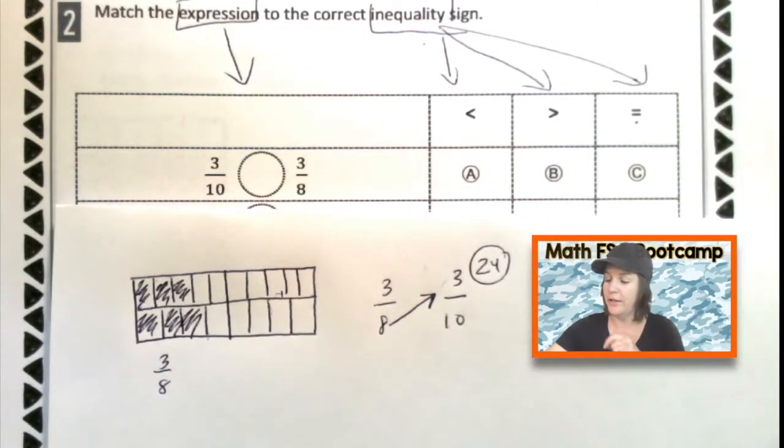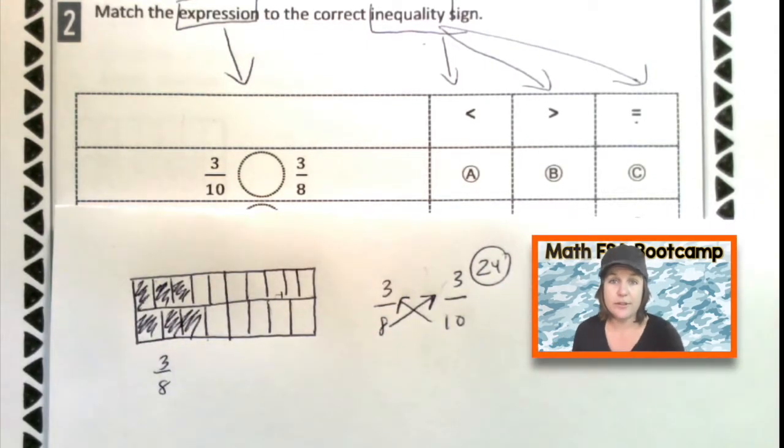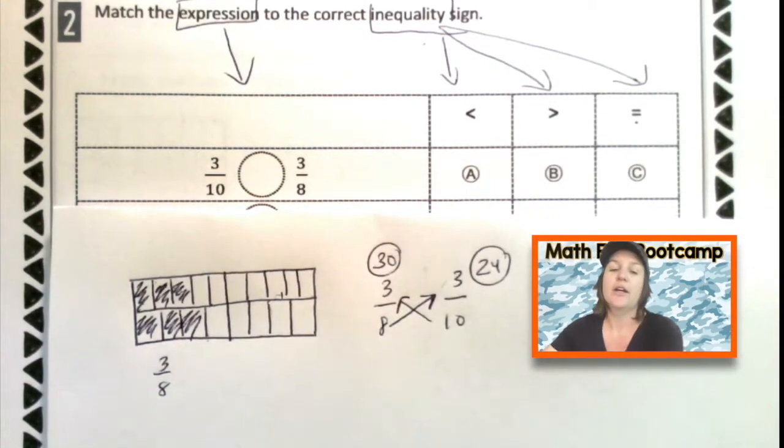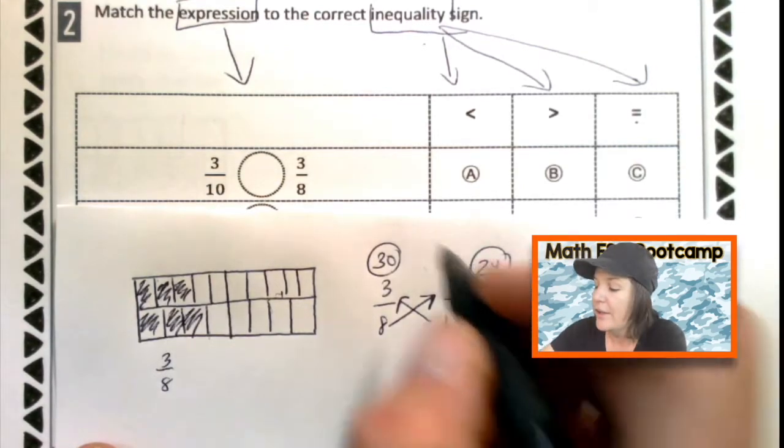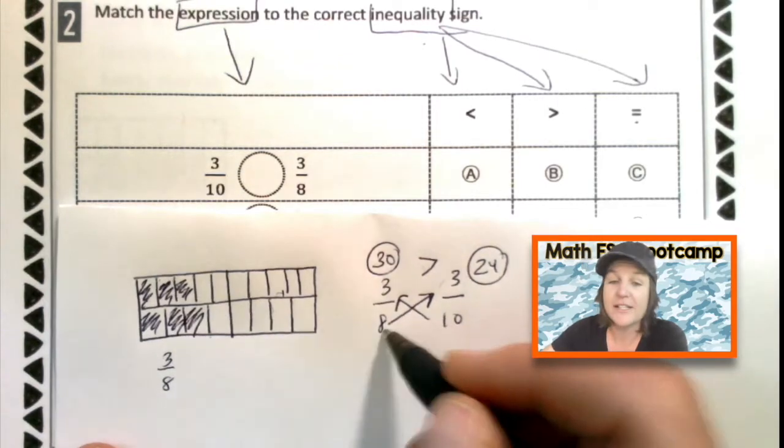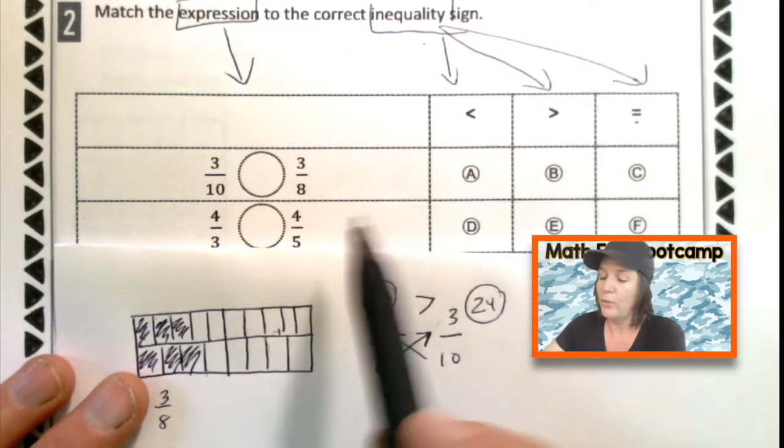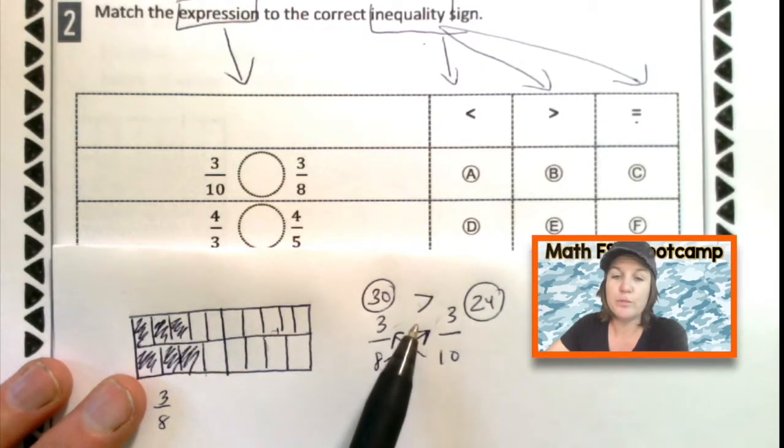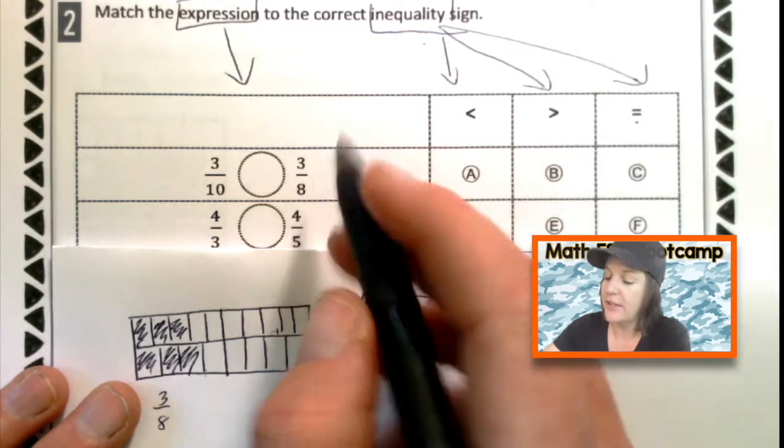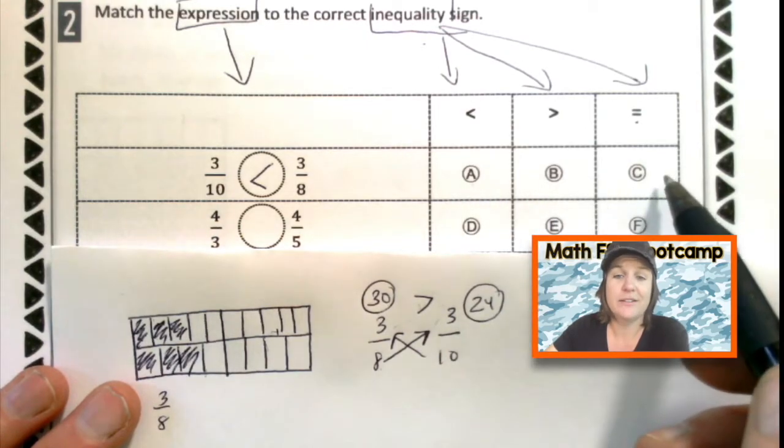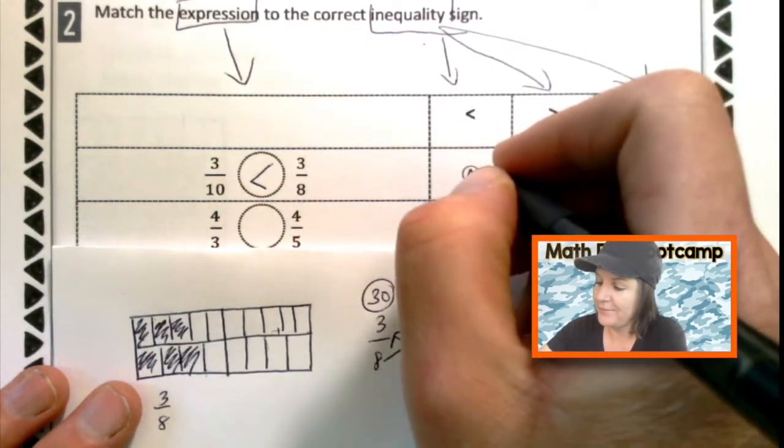And now let's use cross multiplication to make sure. Eight times three. Party rocking with the eights for sure. 8, 16, 24. Got it. Product of twenty-four. Ten times three. Is it too late to learn your tensies? 10, 20, 30. Stop right there, please. Which one is greater? 30 or 24? 30, which means the fraction associated with it, three eighths, is the larger fraction. So we need the inequality symbol to be going towards the three eighths. So we need it to look like this. So which one looks like that? A, B, or C? A, right? Awesome.